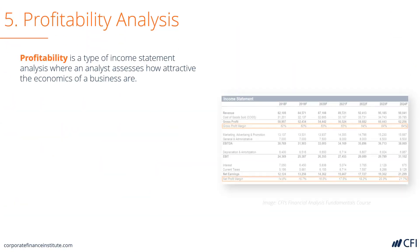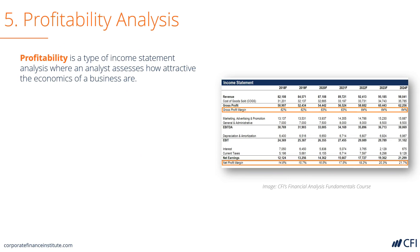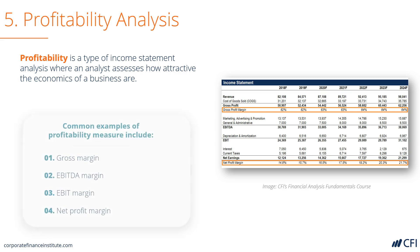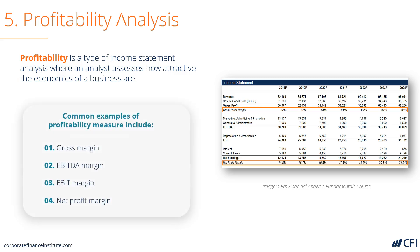Profitability analysis looks at how much income a business earns relative to its revenue. You can look at gross profit, EBITDA, EBIT, and net profit margins to see how much earning a company can generate.